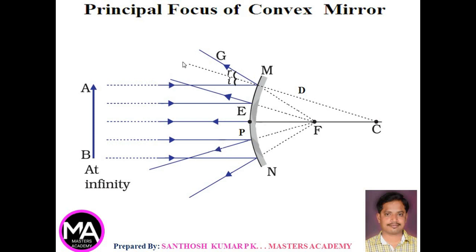Principal focus of convex mirror: the reflected rays will never meet at any point on the left side, so we draw them backwards. Whenever the reflected rays are extended, they meet at a point F. The rays appear to come from that point, and that point is called the principal focus of the convex mirror. The distance of the principal focus from the pole is the focal length. For a convex mirror, the principal focus and center of curvature are on the right side — the back side of the mirror.